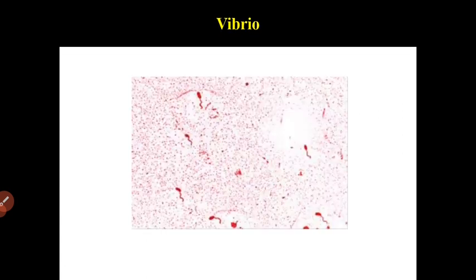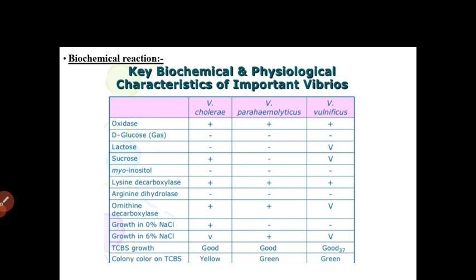This is the microscopic image of Vibrio. Moving ahead, we will see biochemical reactions. There are three groups: Vibrio cholerae, Vibrio parahaemolyticus, and Vibrio vulnificus, and their biochemical reactions are given in the chart.